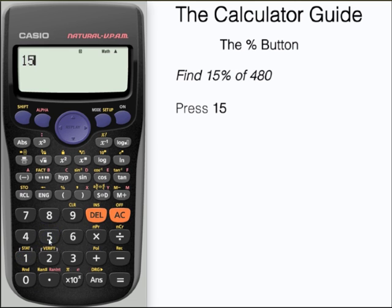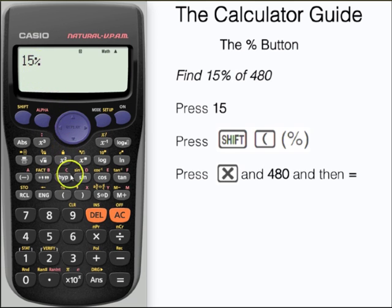Type in 15 and then we want to access the percentage function. We can do this by pressing shift and then the left bracket. That should display a percentage in our calculator's display. Then if we multiply by 480 and press equals, that should give us our answer: 72.